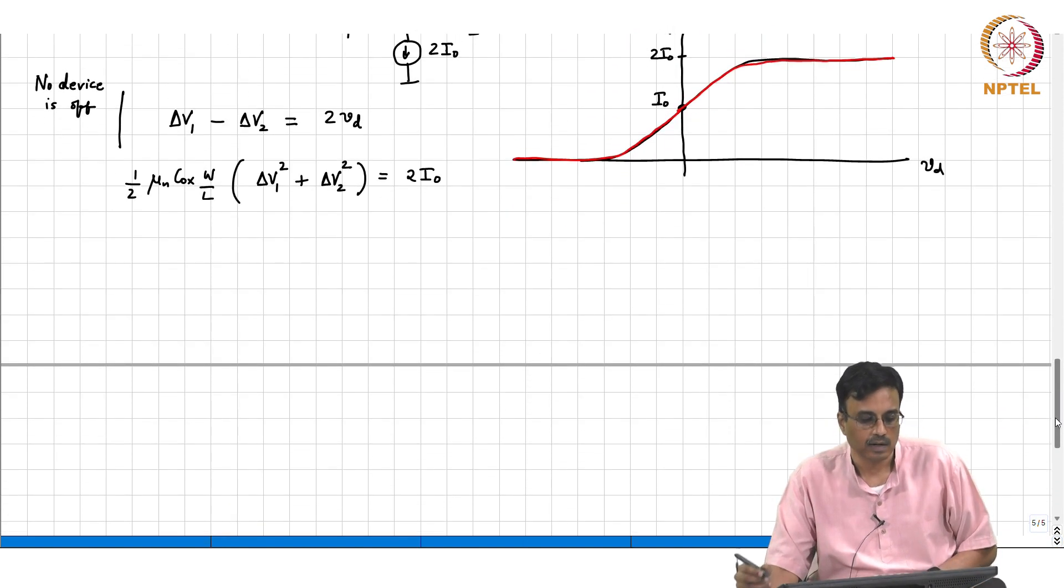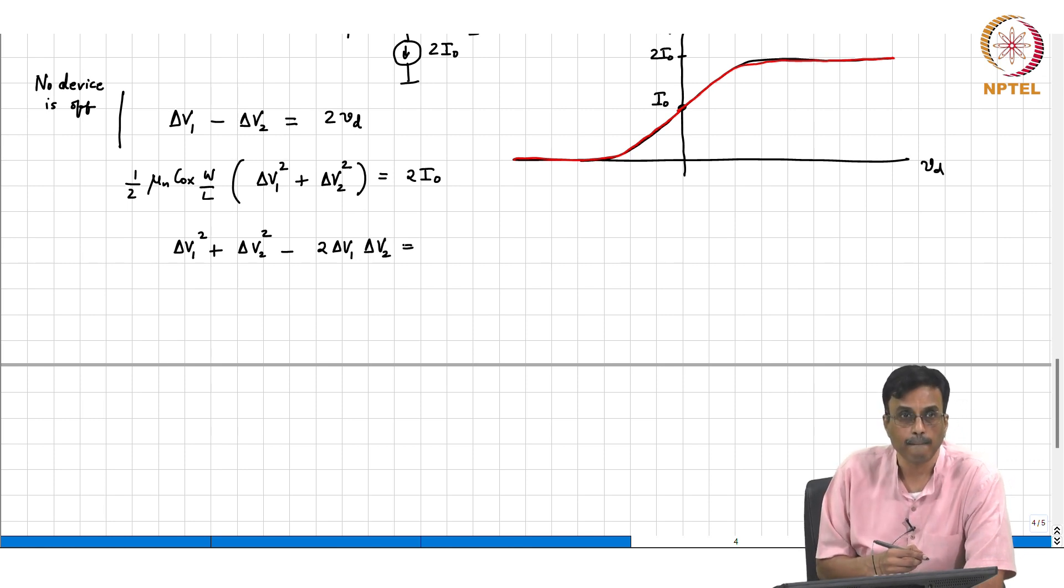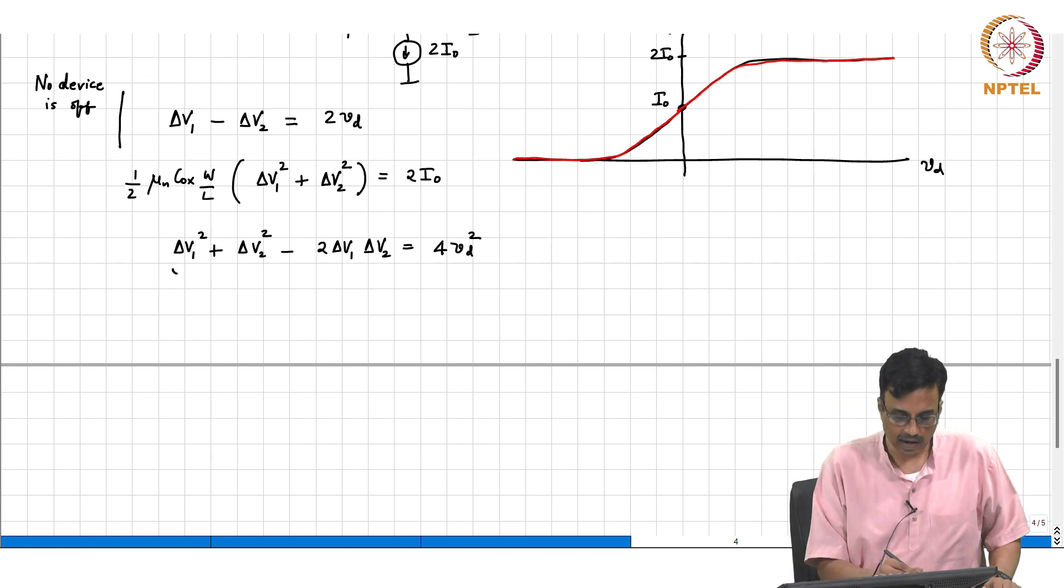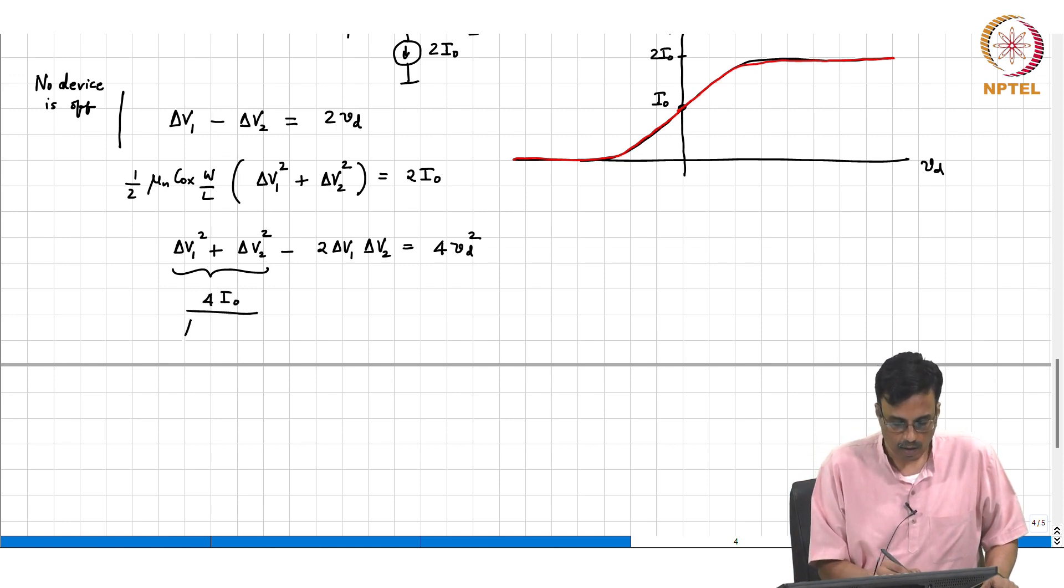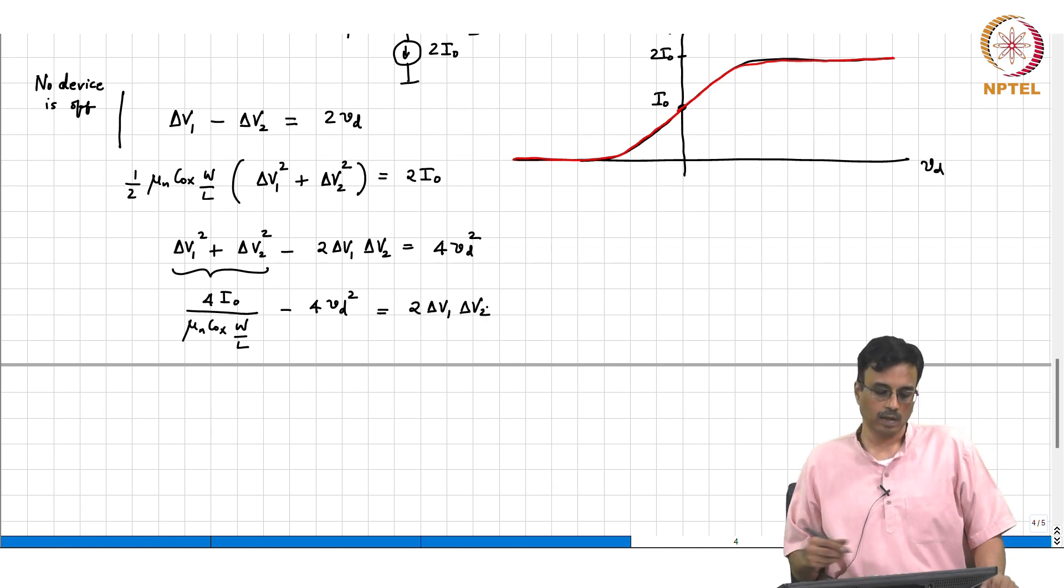Now the question is how do you find delta V1 square from the first equation? This is now just algebra, there's no major insight here. Delta V1 square plus delta V2 square minus 2 delta V1 delta V2 is 4 Vd square. But this guy equals 4 I naught over mu n Cox W by L. So this minus 4 Vd square therefore equals 2 delta V1 delta V2.